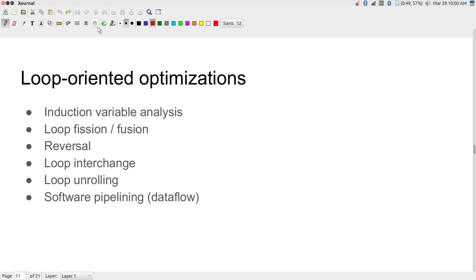We are going to continue where we left off yesterday, considering loop-oriented optimizations. Loops — for loops or while loops — are a very common occurrence in most signal processing algorithms or in general in most compute-intensive algorithms. In high performance computing, problems typically involve vectors or matrices: iterating over dimensions, multiplying, accumulating, doing matrix inversions. Linear algebra problems and convolutions found in neural networks all end up as matrix operations, which ultimately get implemented as loops.